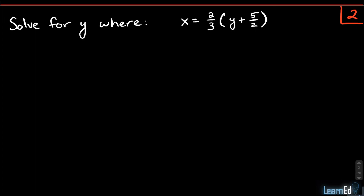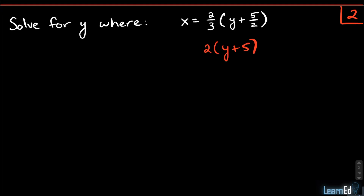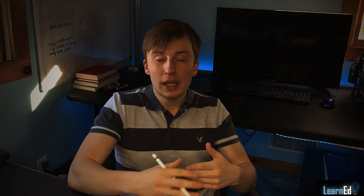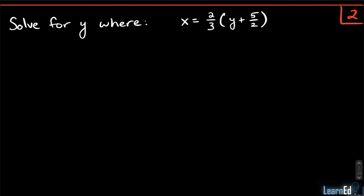We just have to get y by itself. Don't be scared by the fractions — they work just the same. The reason people don't like fractions is there are some extra steps like finding common denominators, but nothing to worry about. The first thing we're going to do is divide by two thirds on both sides. That makes this two thirds go away, because two thirds divided by two thirds is one. On the left side, we do x over one divided by two over three, which becomes x times three over two — that's stay, change, flip. So we get three x over two.